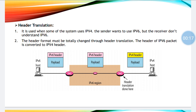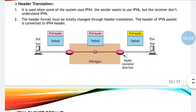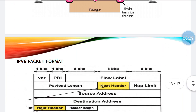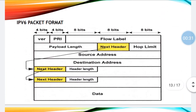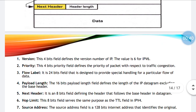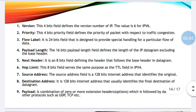If you remember, our second part of second chapter ended with header translation, which is a method for transition from IPv4 to IPv6. So finally, we'll start IPv6 packet format. In case they ask a question on IPv6 packet format, you are supposed to draw this diagram and explain all the fields associated with it.